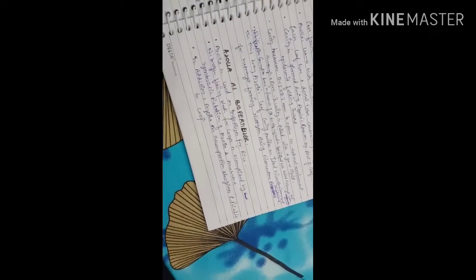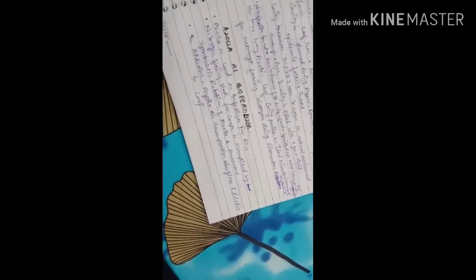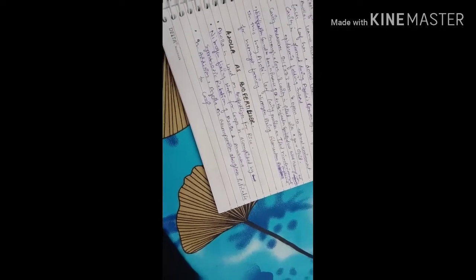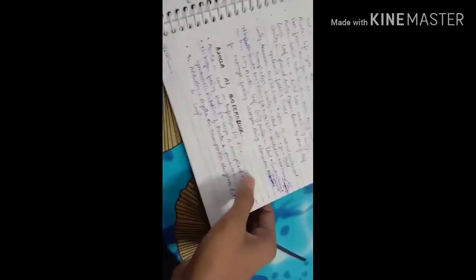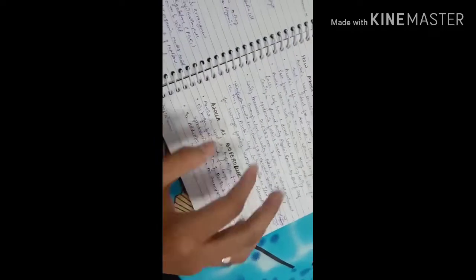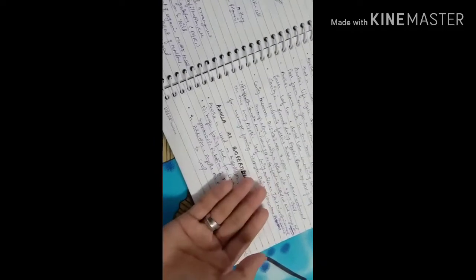In addition, azola on decomposition also gives potassium, phosphorus, zinc, and iron to the crop. When it will be nitrogen-fixing and then it will die, it will be found in the soil and will leave potassium, phosphorus, zinc, and iron in the soil.